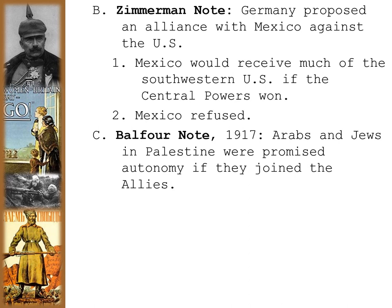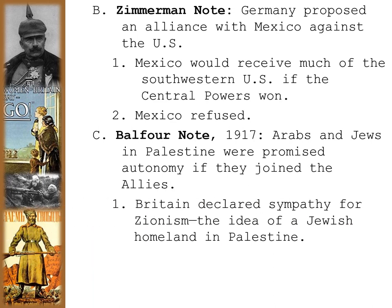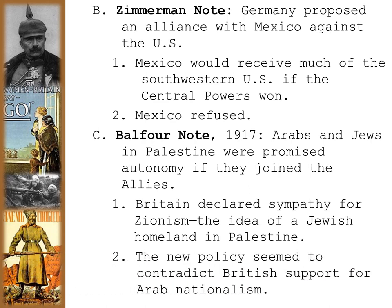The Balfour Declaration is another diplomatic issue from World War I. In 1917, the Arabs and Jews in Palestine were both promised autonomy if they joined with the Allies — but they can't both have autonomy if they both want the same territory. The Arabs had had many promises made to them by the British and French to destabilize the Ottoman Empire, and those promises were not followed through on. Britain declared sympathy for Zionism and the idea of a Jewish homeland in Palestine — angering the Arabs who were also promised autonomy for joining the Allied effort. This goes a long way to explain the resentment in that part of the world toward the West to this day.